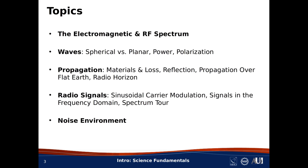The concept of reflection will lead us to an important model for terrestrial propagation, in which we assume that the surface of the Earth is flat, so that propagation between two points near the surface of the Earth can be modeled as the coherent sum of a direct path contribution and a contribution reflected from the ground. We call this the two-ray model. Then we'll address the concept of radio horizon, which is a crude but useful way to estimate the maximum range of signals in terrestrial radio systems.